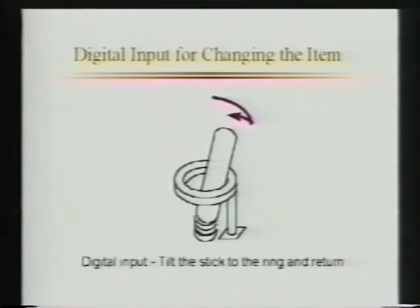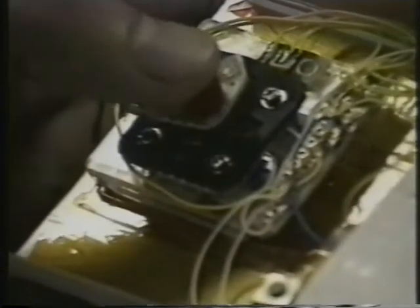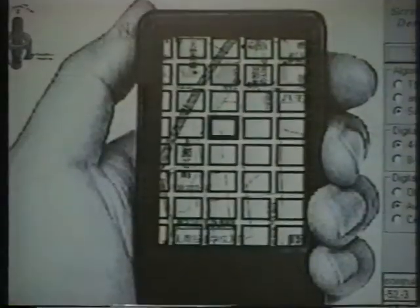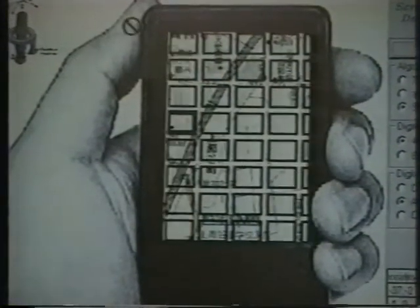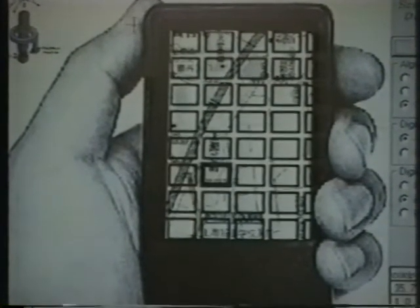The user then chooses the desired object. A sideways tapping motion is regarded as a digital input that changes the highlighted area. This digital input can be done in any direction.